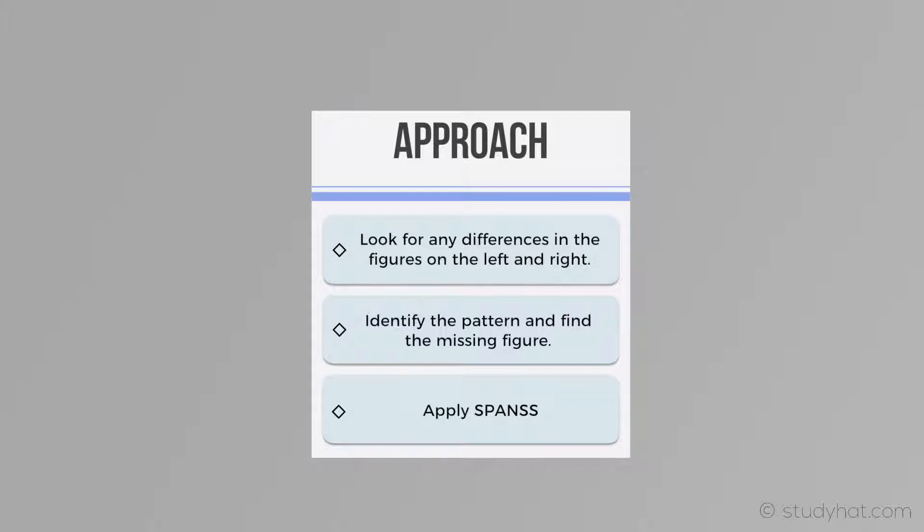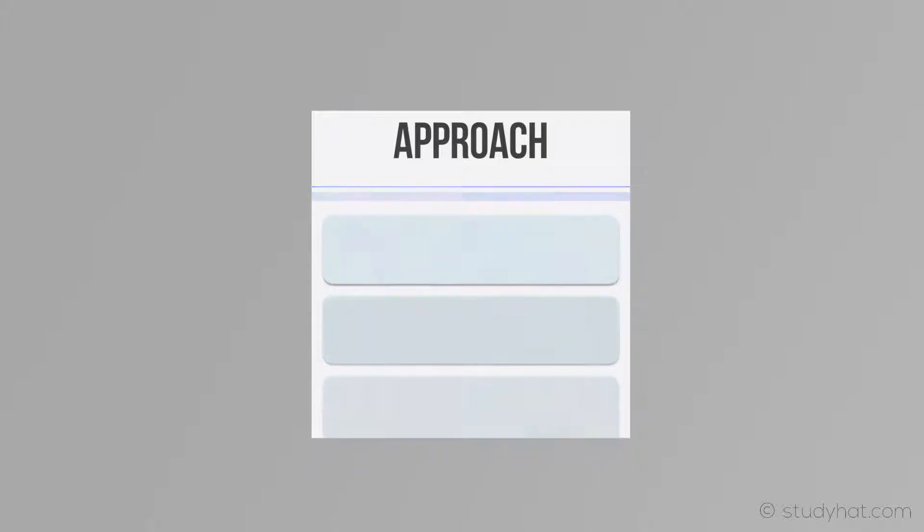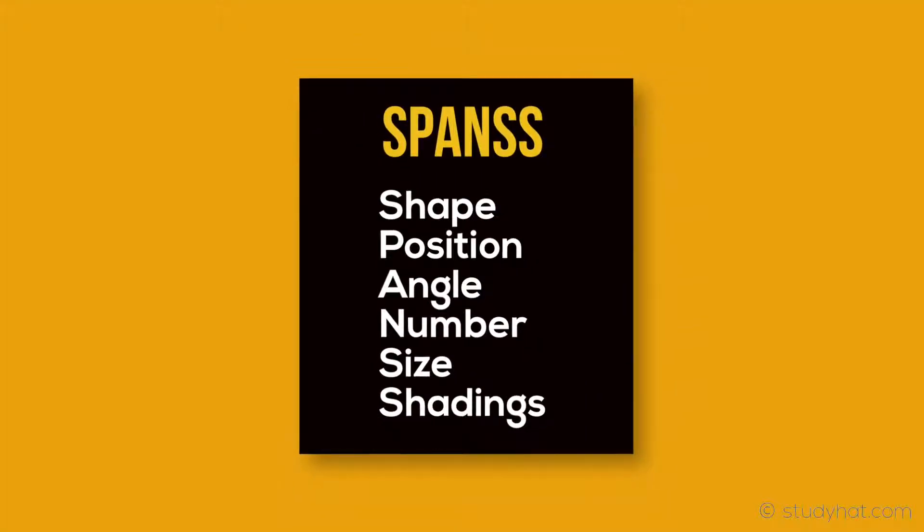Finally, the best way to double-check your answer if you are unsure is to apply what is called SPANS. And make sure that you go down each letter, which is shape, position, angle, number, size, and shadings, to double-check if you have taken a look at all of the possibilities.